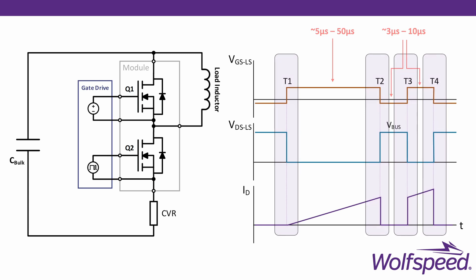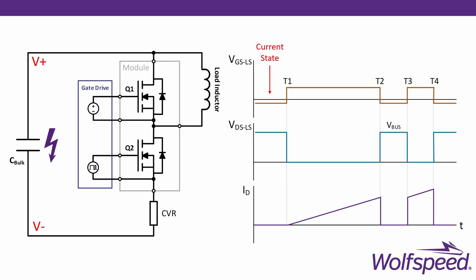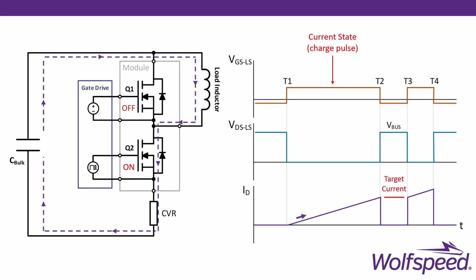The sequence of a double pulse test is as follows. First, we need to charge the bulk capacitor to our desired voltage across the module from V plus to V minus. This represents a real system. Note that in the LTSPICE simulation, it uses an ideal voltage source here for simplicity. Next, we turn the low side device on for a specific duration, known as the charge pulse. During this time, current flows through the load inductor, then the low side switch, and back again to the capacitor bank. Throughout this time, the current will increase. The larger the load inductor, the slower the current will increase.